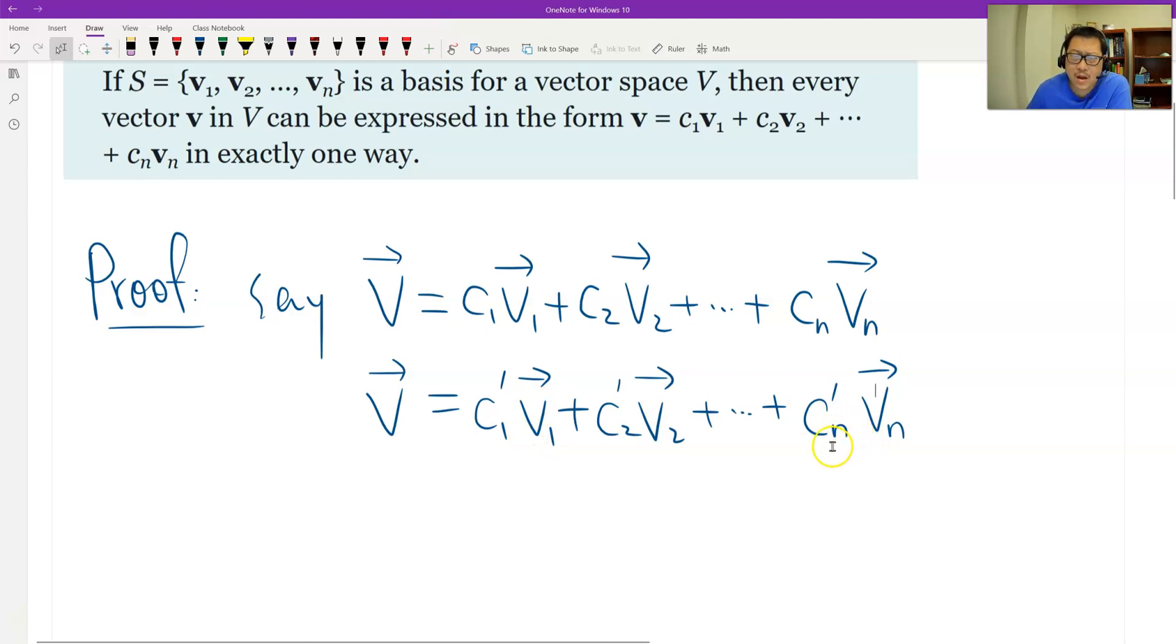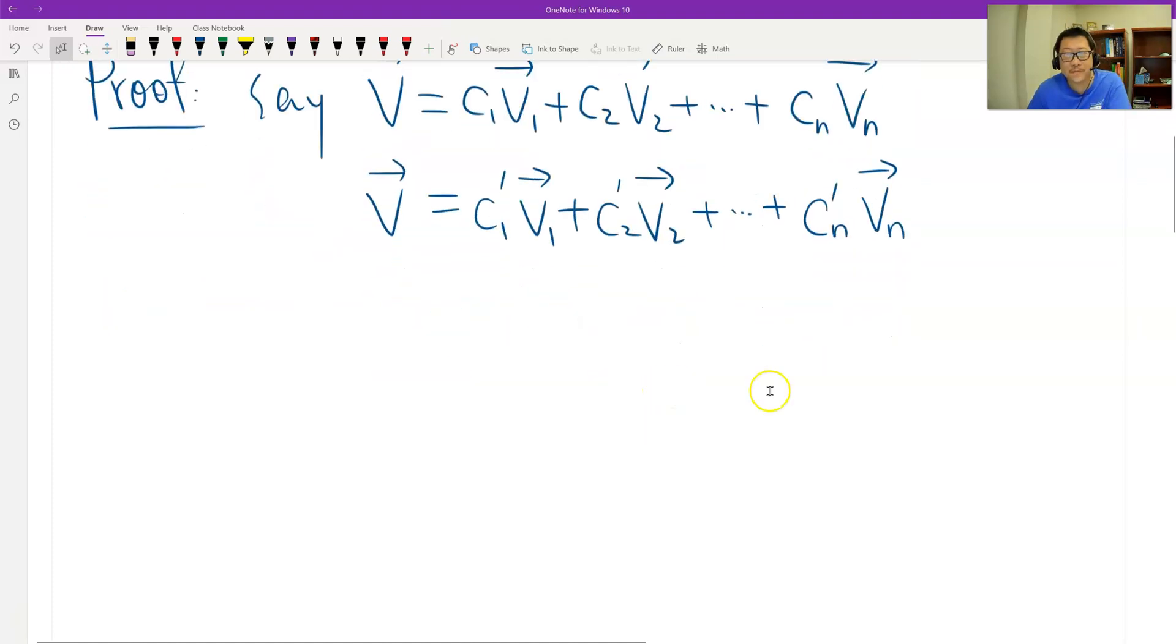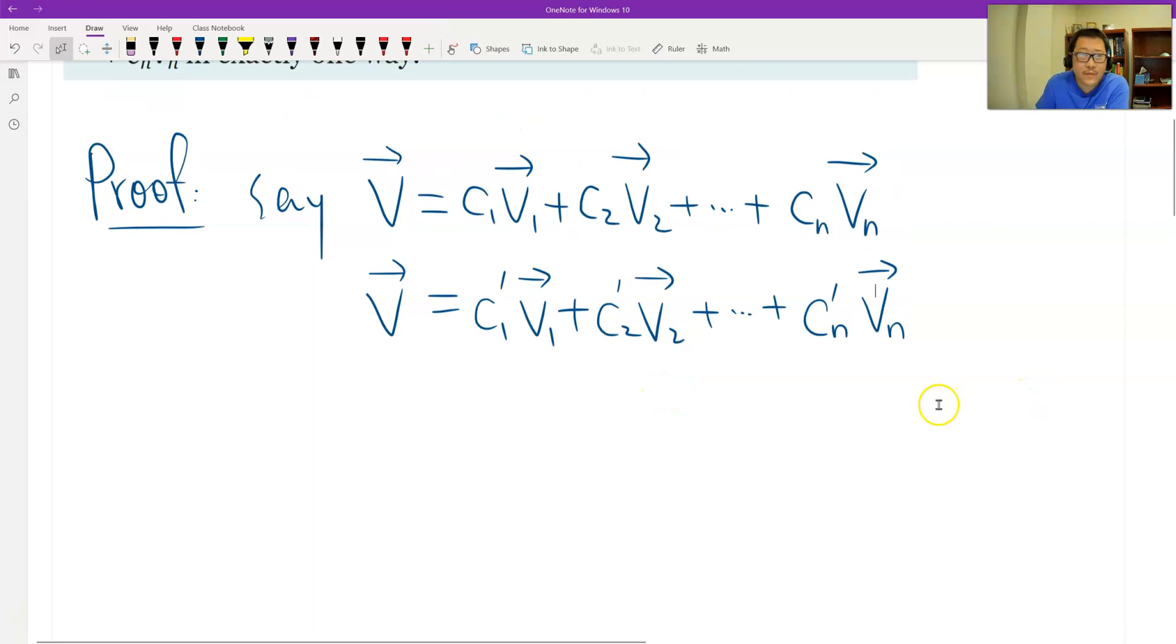Because we need to prove exactly one way, therefore we have to see the coefficient should be equal to each other. Is that true? Yes. Now we can just do subtraction. If I say here is one, here is two, we just use one subtract two.